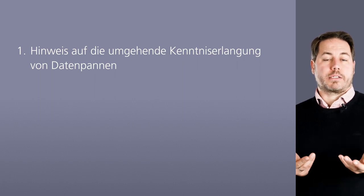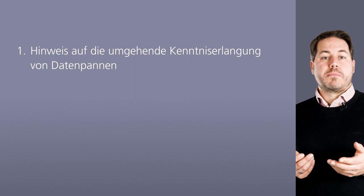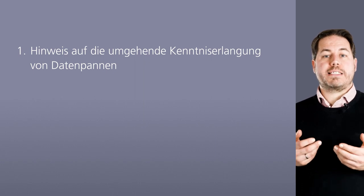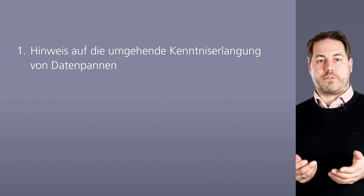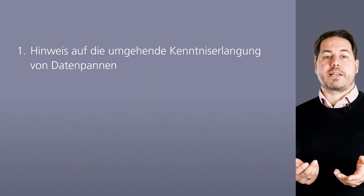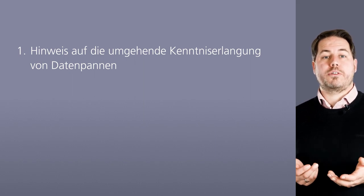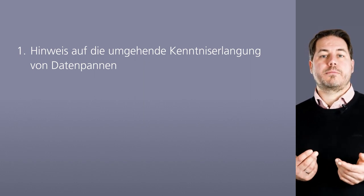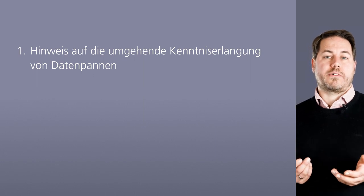Im nächsten Schritt müssen wir noch klären, wie die Schule damit praktisch umgehen kann. Folgende Schritte sollten berücksichtigt werden. 1. Wir müssen auf die umgehende Kenntniserlangung von Datenpannen hinweisen. Praktisch heißt das, es sollte unter den Mitarbeitenden in der Schule, also der Schulleitung, den Lehrkräften und dem Sekretariat kommuniziert werden, dass die zügige Weiterleitung des Vorfalls an den Datenschutzbeauftragten besonders wichtig ist. Es sollte hervorgehoben werden, dass durch zügiges Handeln weitere Schäden abgewendet und Prozesse optimiert werden können. Es sollte die Angst davor genommen werden, dass das eigene Handeln im Sinne eines Verschuldens zu schlimmen Konsequenzen führt.